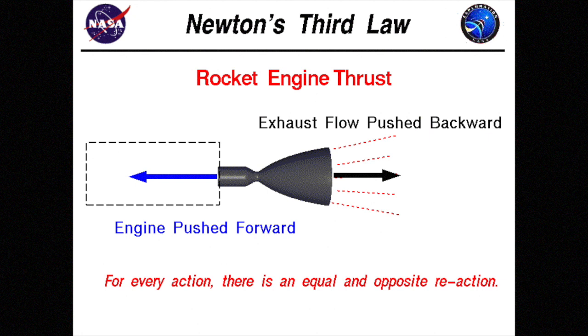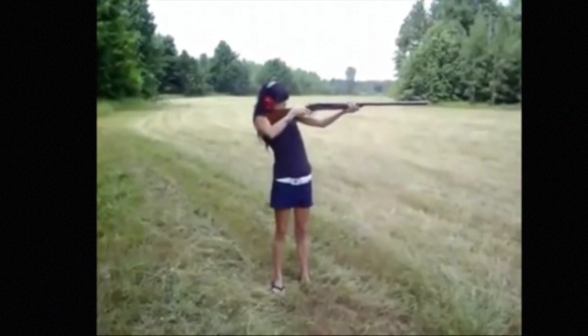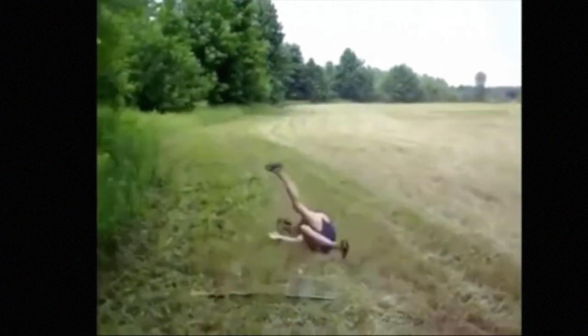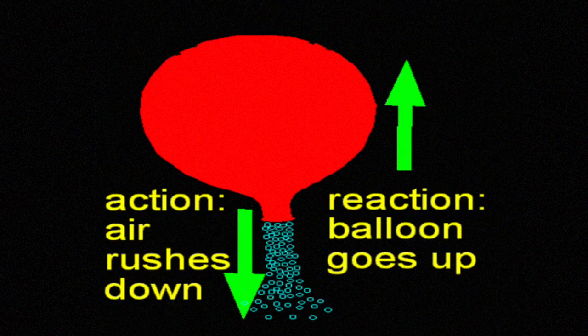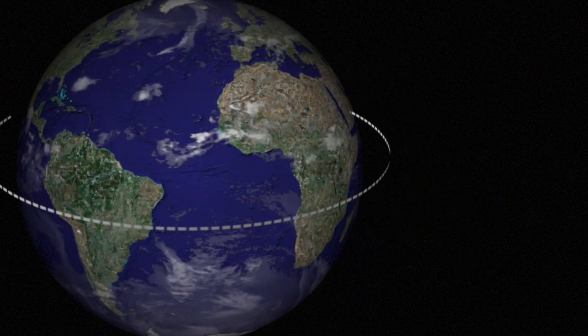Newton's third law says that for every action, there is an equal but opposite reaction. The orbital ring works on the principle of Newton's third law.